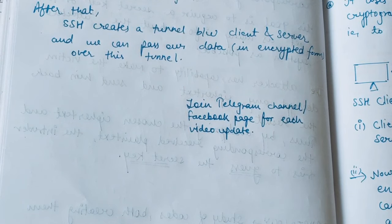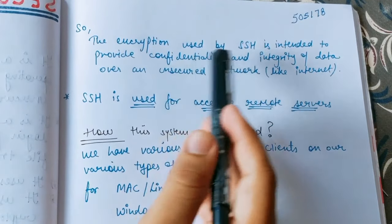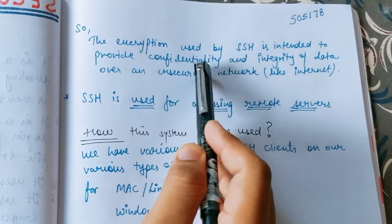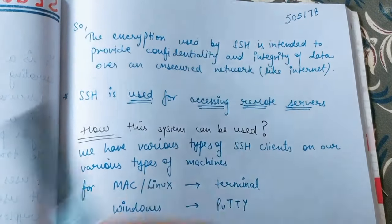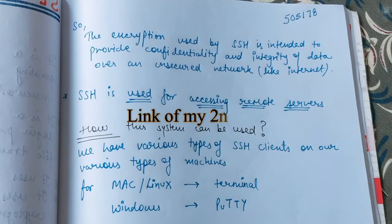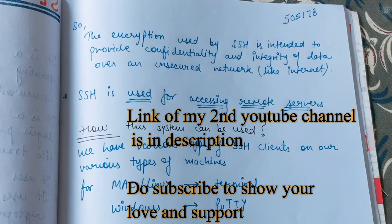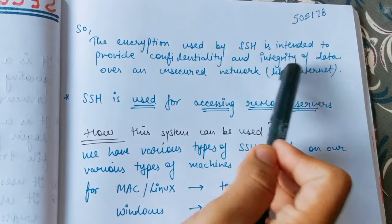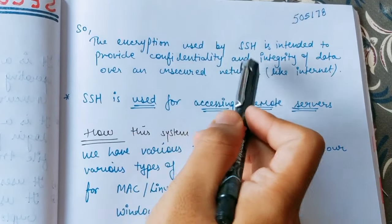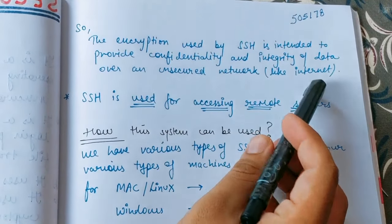The encryption used by SSH is intended to provide confidentiality. Over a normal channel using the SSH protocol, we can simply transfer data from the client to the server and get confidentiality and integrity of the data. No one can change our data because of the SSH protocol over an unsecured network — just like our internet.